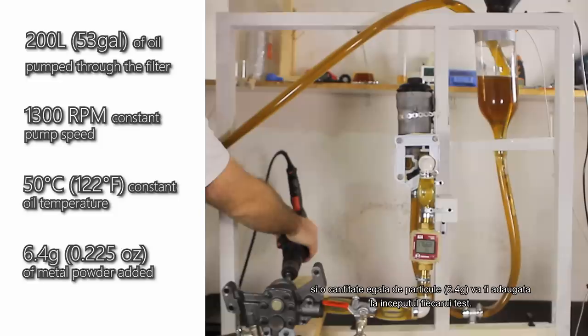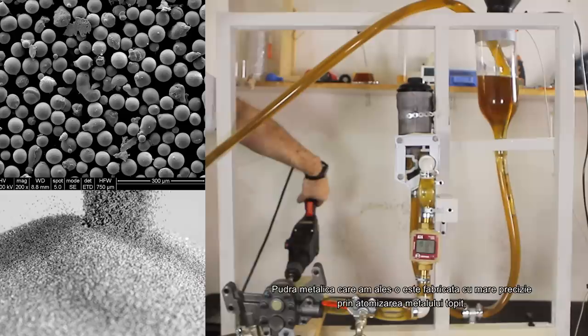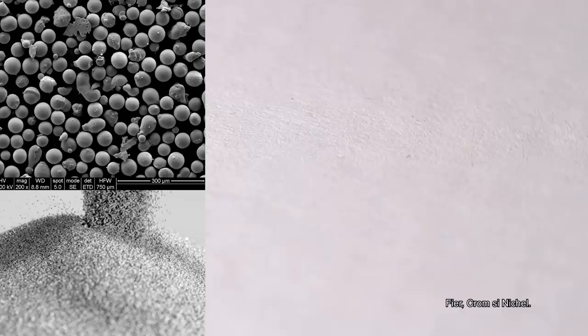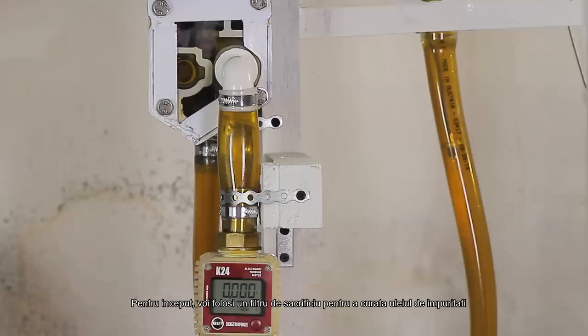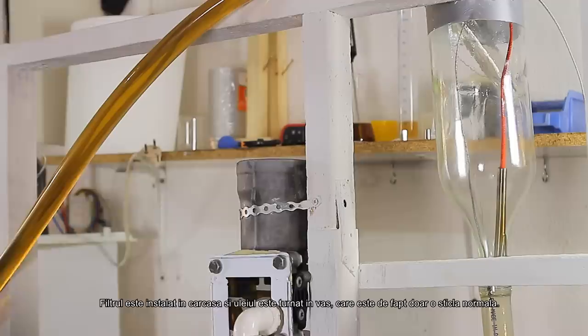Oil temperature will be kept constant at 50 degrees Celsius and an equal amount of particles will be added to the start of each test. The particles that I've chosen are made very precisely by gas atomizing molten metals. I went for a mixture of elements that are normally found in the engine, like iron, chrome and nickel. And the particle dimensions are from 10 micrometers to 45 micrometers. You can see the powder here besides the Philips head. At first I'll run the test with a sacrificial filter in order to clean the oil from any contaminants. We'll start with MAN after that.